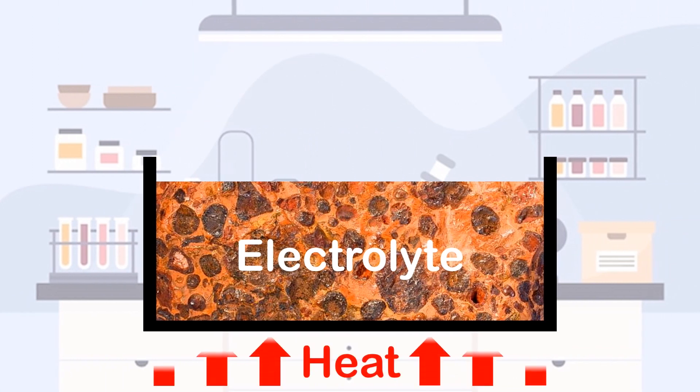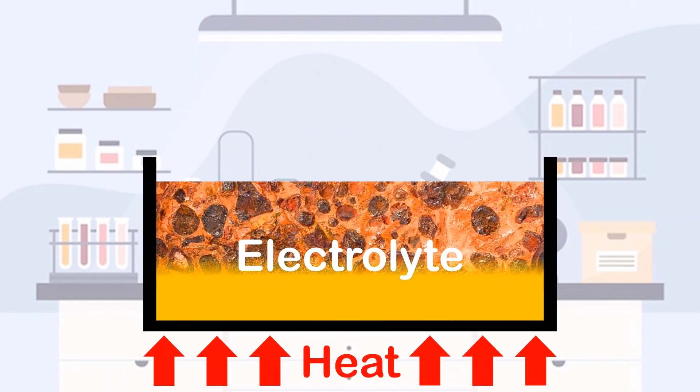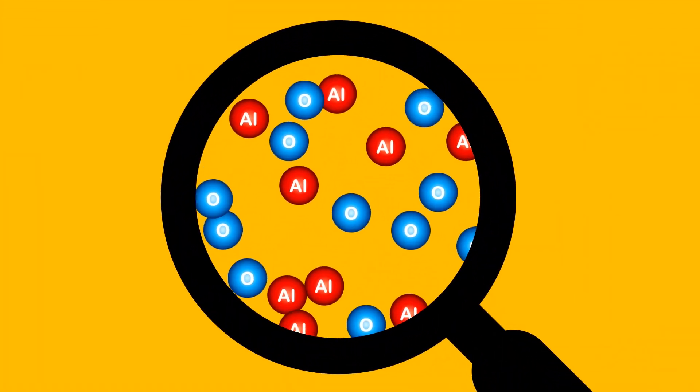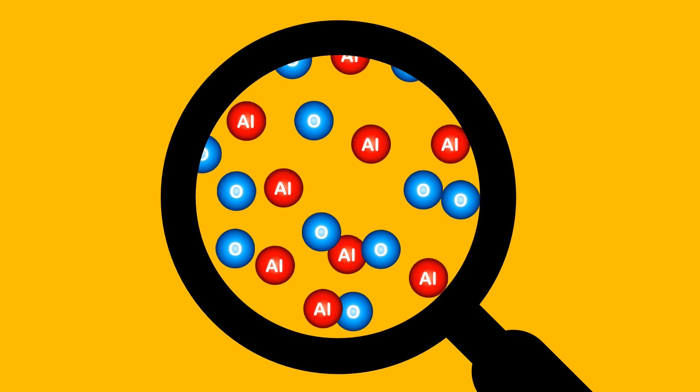Firstly, we heat our aluminium oxide to 1000 degrees so that it melts. This is called our electrolyte. When molten, the ions are able to flow and be separated into metal ions and nonmetal ions.